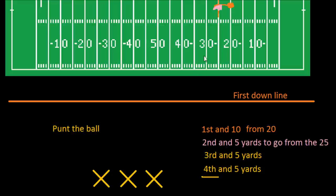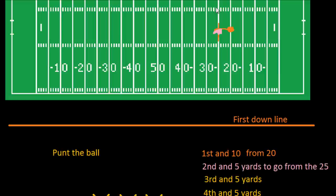Often what you'll see teams do on fourth down — if they are this far back — is something called punting the ball. They're not trying to get the first down anymore; instead they snap it back and the punter kicks the ball down the field, trying to push the other team back. That defensive team will then take over the ball, and it will be first and ten for them — in this case from the 25-yard line — and they'll try to move forward.